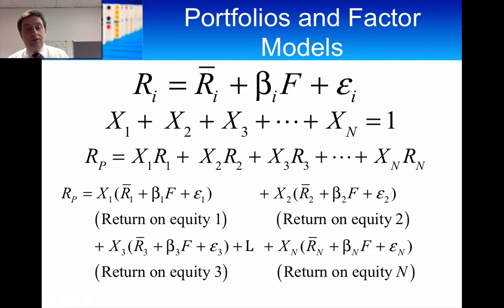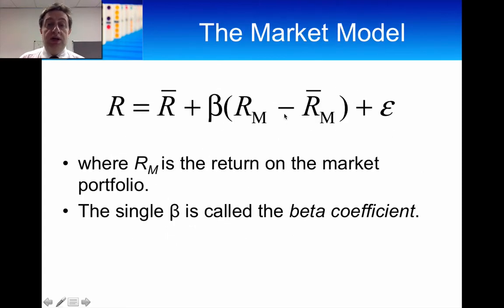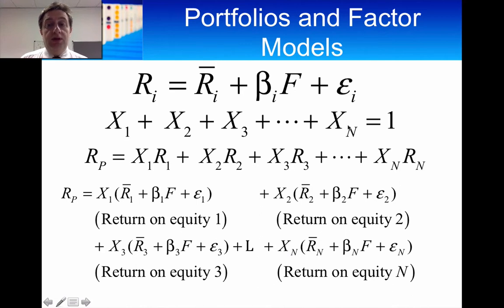Now let's look at this slide. Starting with the first line, just like the market model, the return on a security equals the expected return, plus the unanticipated part of the factor (beta times F), plus the unsystematic part of the return. There's no subscript on F because it's one factor affecting every security. You'll notice just that one factor component.